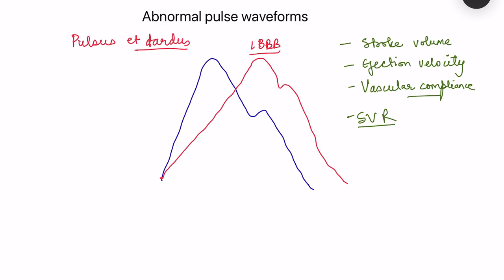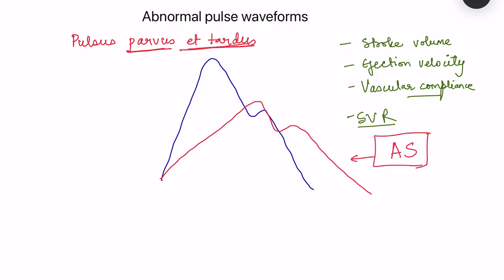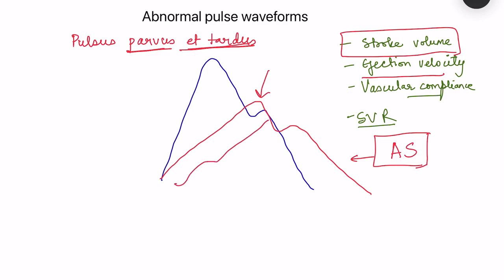Combining pulsus parvus and pulsus tardus gives pulsus parvus et tardus: a pulse that is both low amplitude and slowly rising. This is characteristically seen in aortic stenosis, where stroke volume is reduced — explaining the low peak — and ejection velocity is also reduced due to outflow obstruction, explaining the slow upstroke.